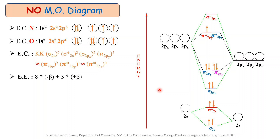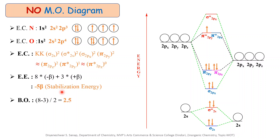The next important point is the calculation of stabilization energy (energy wall) during the formation of NO. The energy wall is calculated using the formula: (number of electrons in bonding MOs × −β) + (number of electrons in anti-bonding MOs × +β). There are 8 electrons in bonding MOs and 3 electrons in anti-bonding MOs. Substituting: 8(−β) + 3(+β) = −5β, which is the stabilization energy. For bond order: (bonding electrons − anti-bonding electrons) / 2 = (8 − 3) / 2 = 2.5.